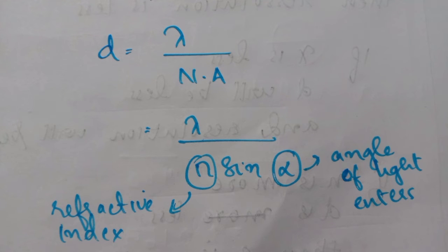Next, we have an equation for resolution power: d equals lambda divided by NA, where NA means numerical aperture. This NA, numerical aperture, can be written as n sine alpha, where n is the refractive index and alpha is the angle of light that enters.